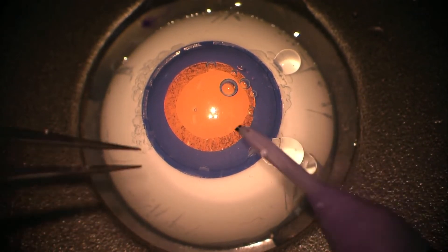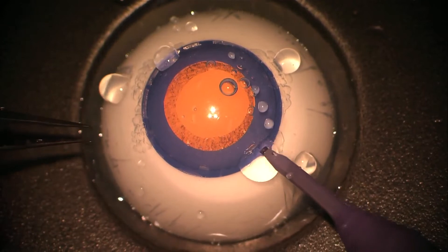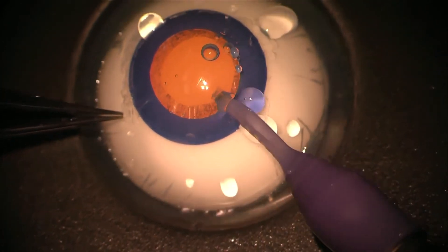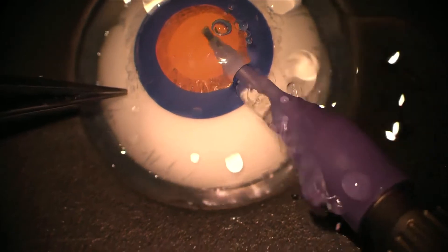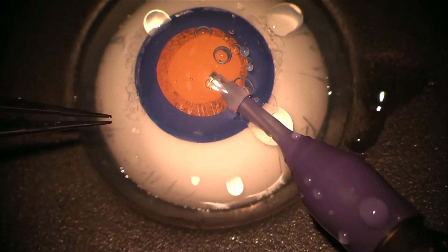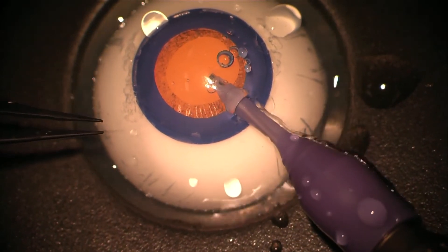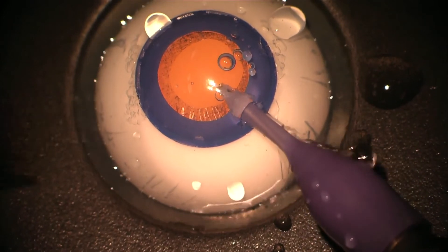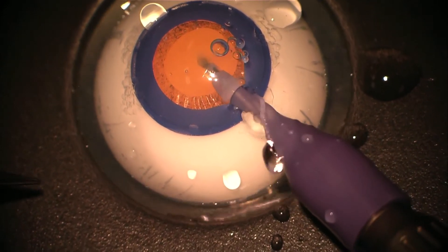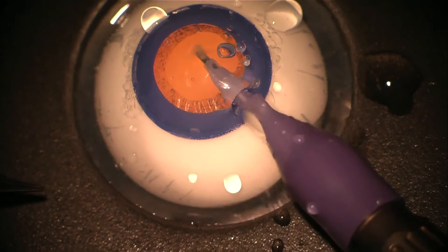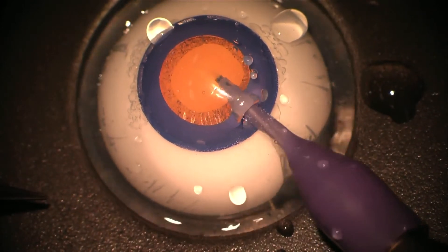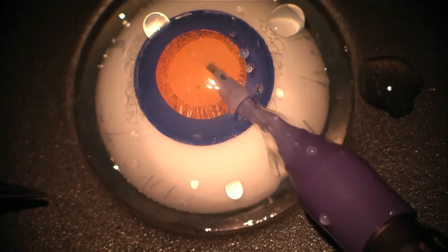When it comes to faco emulsification, the principles they've learned on the IC of creating a nice steep sided groove, maintaining the eye in the primary position without pushing the lens, letting the faco probe do the work are all enforced with this mode of training.